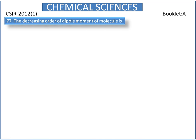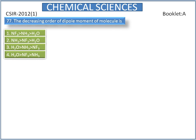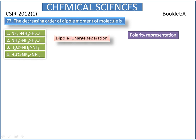The question asks for the decreasing order of dipole moment of molecules. A molecule has a dipole when there is a charge separation. The strength of the dipole depends upon the difference in the electronegativity of the atoms in the molecule. The polarity in the bond can be represented by a partial positive charge and partial negative charge, or by an arrow indicating a dipole — that is, two charges separated by a distance.